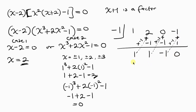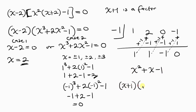The coefficients from synthetic division give us a quadratic factor: x² + x - 1. So the cubic factors as (x + 1)(x² + x - 1) = 0. This gives two sub-cases: x + 1 = 0, giving x = -1, and x² + x - 1 = 0.